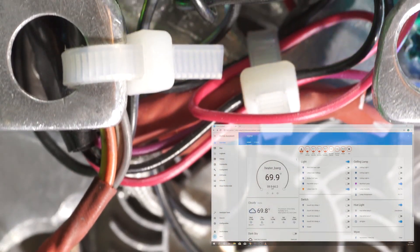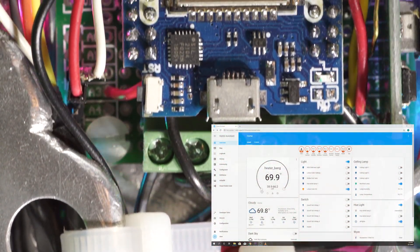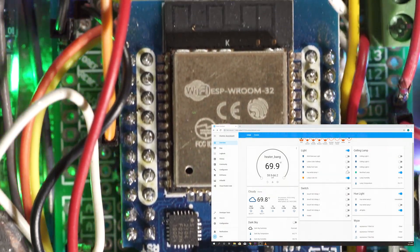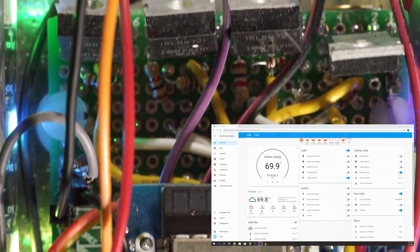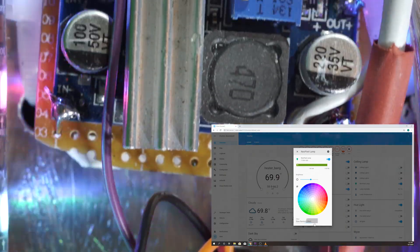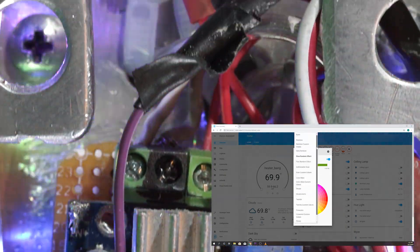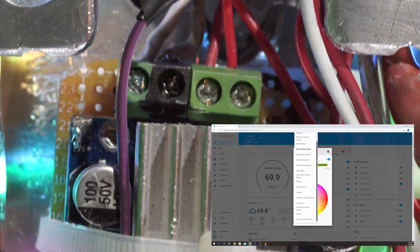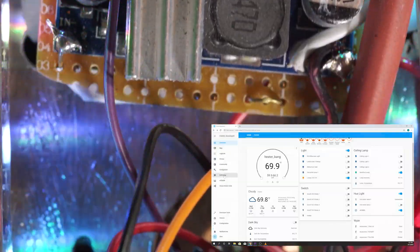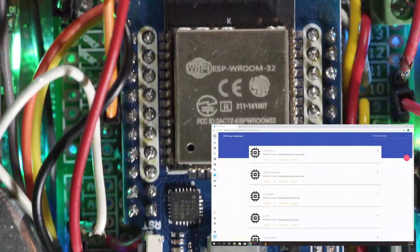It's a D1 Mini ESP32. There are two buck power supplies. One runs two lights, the other one runs three lights. There's also a buck Mini 360 to run the ESP32.